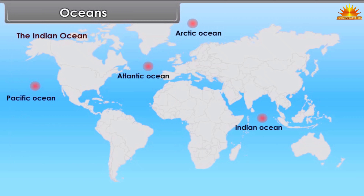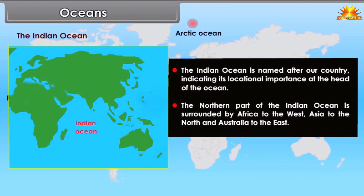The Indian Ocean is named after our country, indicating its locational importance at the head of the ocean. The northern part of the Indian Ocean is surrounded by Africa to the west, Asia to the north, and Australia to the east.